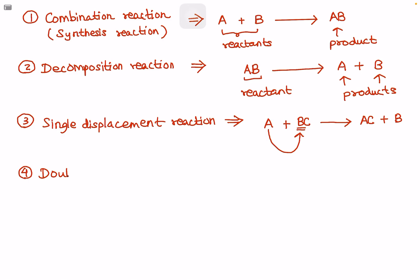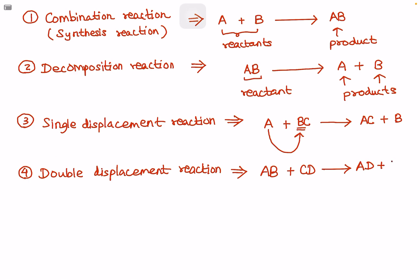This is a double displacement reaction. Now we have the formula: AB plus CD gives AD plus CB. The C and D switch places with A and B.